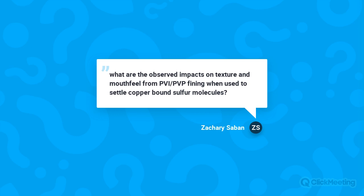Zachary asks about the texture and mouthfeel impacts of PVI/PVP fining when used to settle copper-bound sulfides. PVI/PVP is similar to PVPP — it can remove some hydroxycinnamic acids that contribute bitterness, removes a tiny bit of color, and has a mild impact on mouthfeel since it is a fining agent. The best approach is to request a sample and run a benchtop trial. In many wines it actually cleans up the wine and removes bitterness, and the impact is generally fairly gentle — not like carbon treatment.